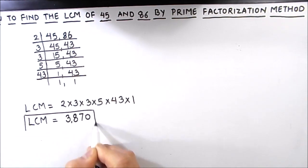So this is how you can find the LCM of any number easily using the prime factorization method. I hope this video is helpful to you. If you like the video please hit the like button and subscribe to my channel for more math videos. Thanks for watching.